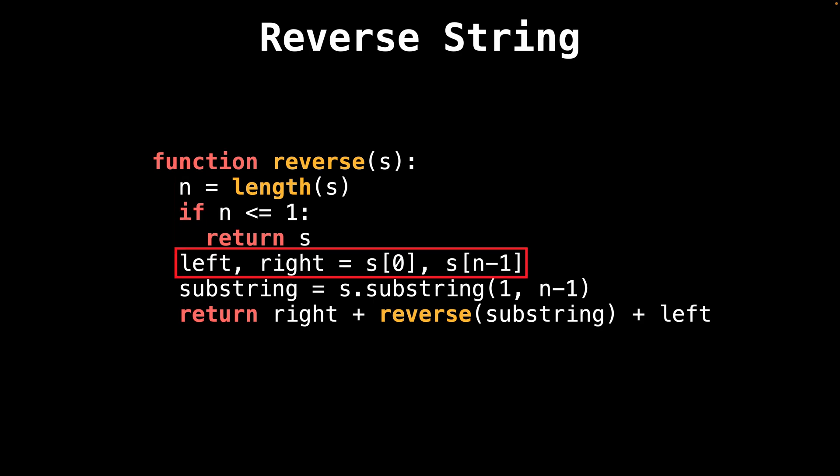So if we're not in a base case situation, we want to swap the leftmost and the rightmost characters of the string. The highlighted line gets the left and the right characters from the string s.